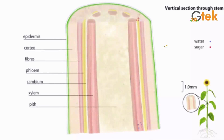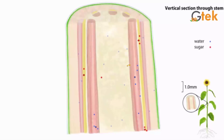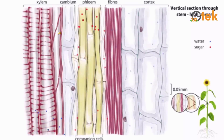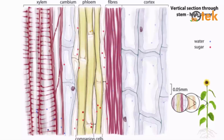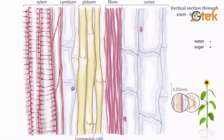Now let us see about the vertical section through the stem. You can see the parts of the stem: xylem and phloem are represented here. Here also you can see the water and sugar molecule transpiration. In the vertical section through the stem in high power, it contains xylem, cambium, phloem, and fiber cortex. This companion cell is already known, and this is the part where sugar is transferred.